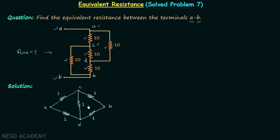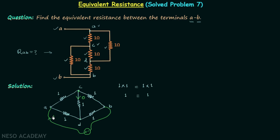This is our new network and here we have a balanced bridge. The bridge is balanced because when you multiply 1 with 1 and 1 with 1 you get 1 in both cases. When the bridge is balanced, the two middle nodes have the same potential, so the potential difference across the middle resistor is zero and therefore the current through it is zero as well.